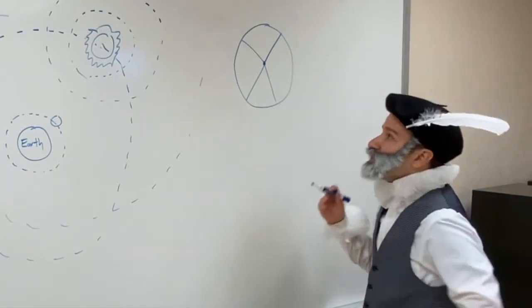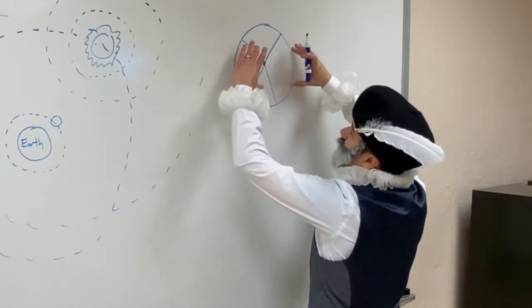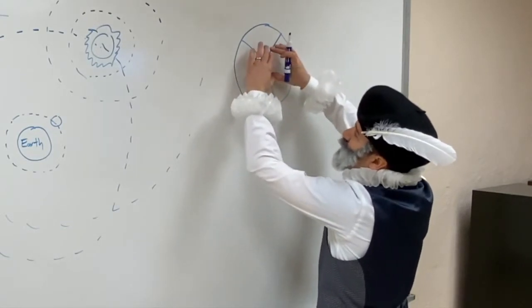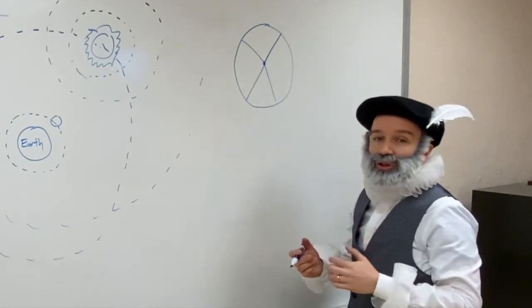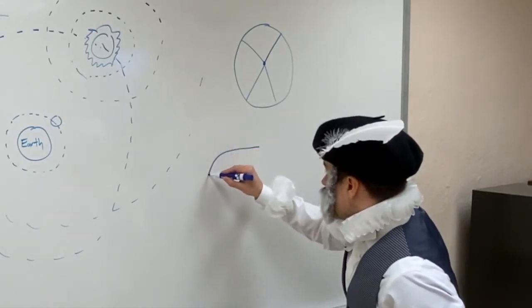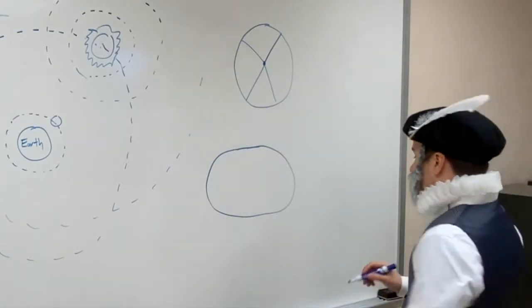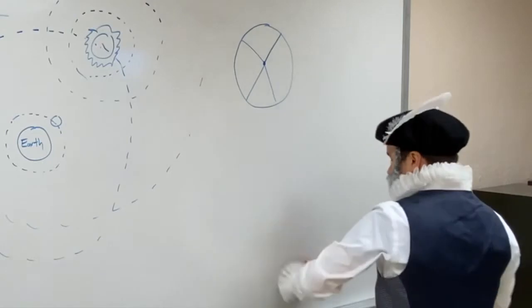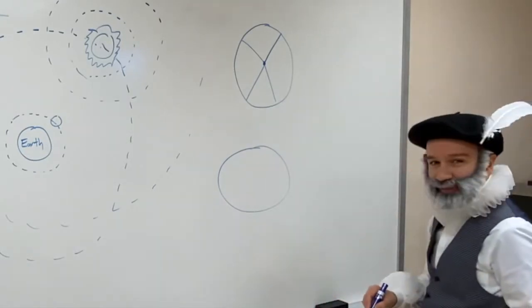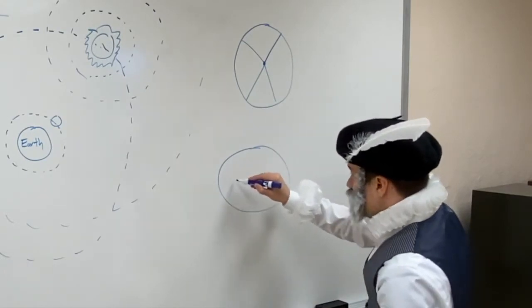In the case of an ellipse, imagine taking that circle and expanding it, stretching it along one axis. So all of a sudden that one center becomes two centers, or the language is focuses or foci. Now I will draw the ellipse as best I can. And I'm dissatisfied with that ellipse, so I'll try one more time. A little bit better.